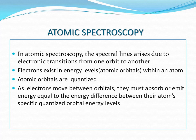In atomic spectroscopy, electrons exist in energy levels called atomic orbitals. Electrons exist in one orbital at a given time.